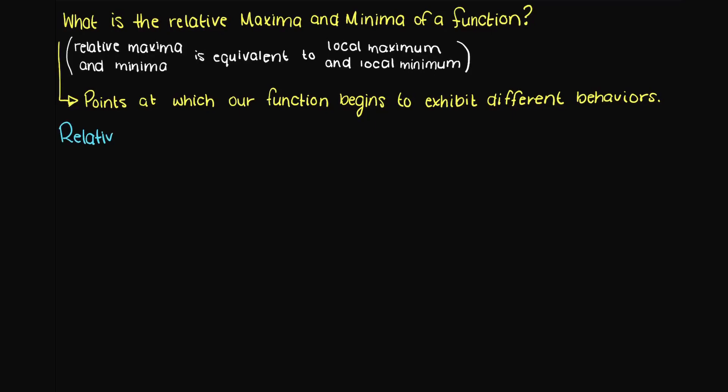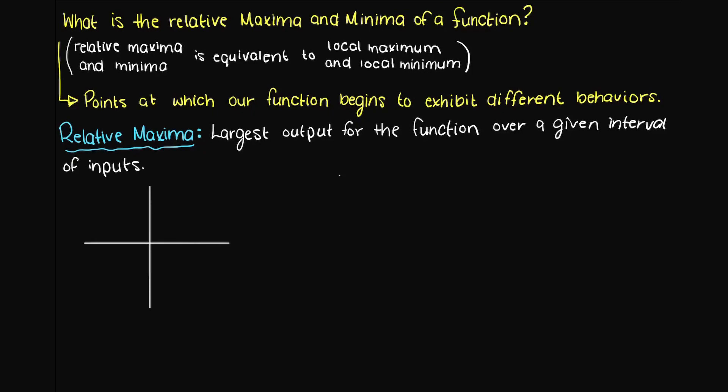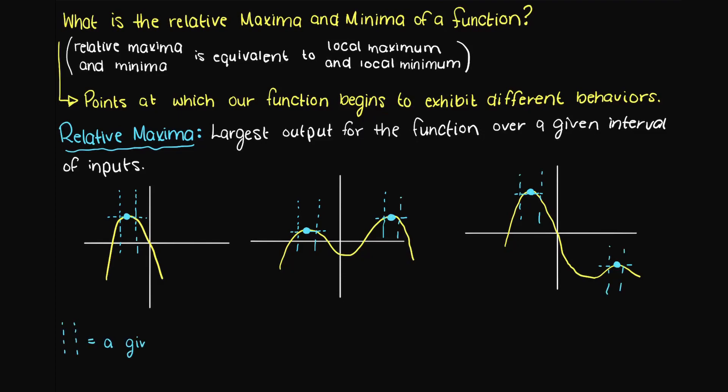The relative maxima of a given function is the largest output for the function over a given interval of inputs. I like to think about this as the top of the hills of our functions. So it is simply the highest point on our graph over our area of interest, that is the region of the graph that we care about.